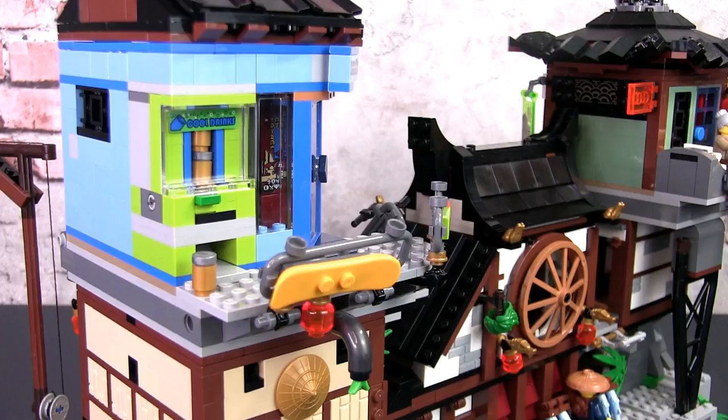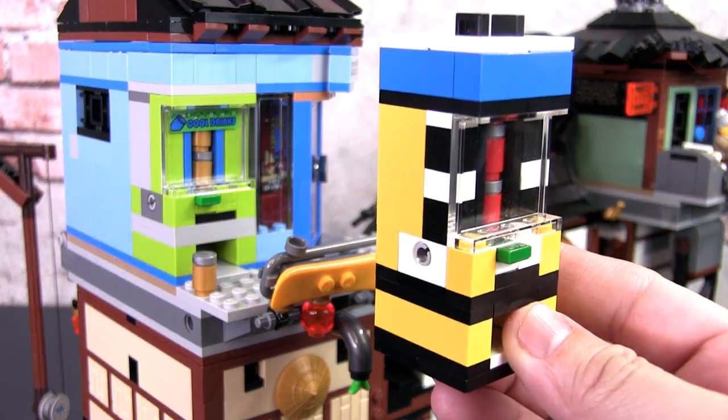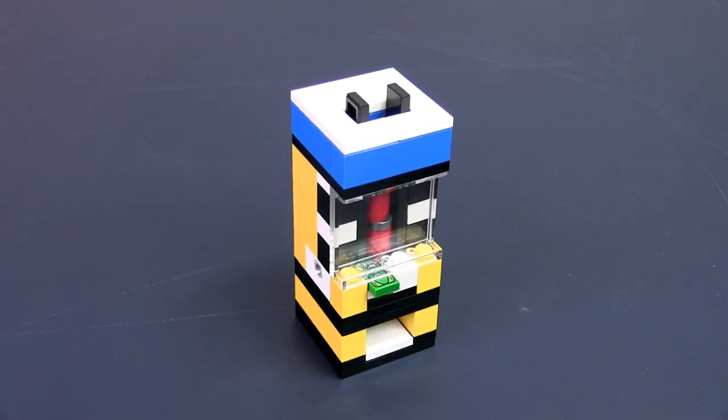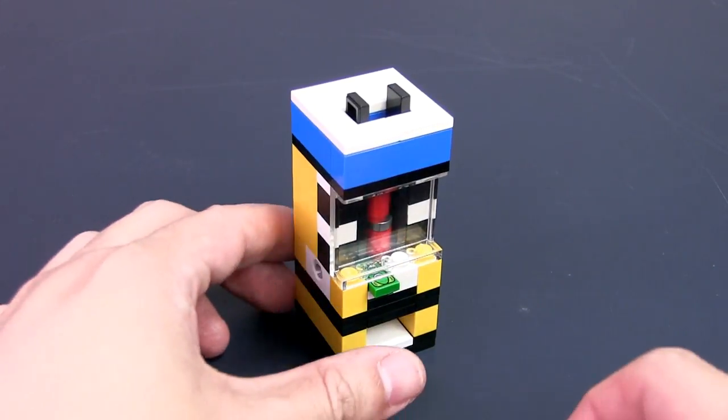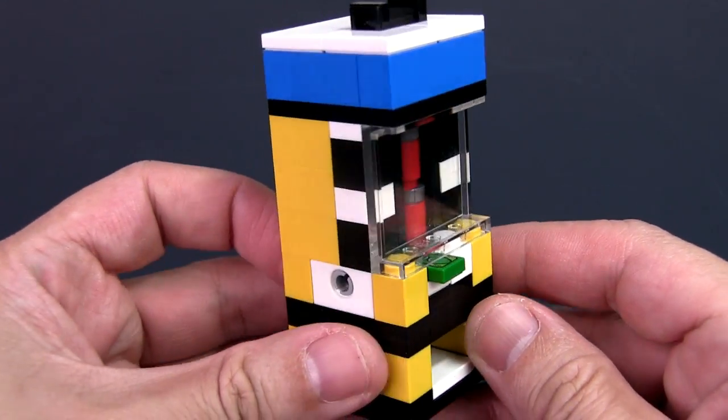Now, not everyone may get the Ninjago City docks. However, you might be interested in the vending machine as a standalone and that's what I've done. I've extracted the vending machine, modified it with more regular parts and built it as a standalone machine which you can place in your own LEGO City. Now, all the credit goes to the LEGO designers, I did not change the inner workings or structure of the vending machine. I just made a few adjustments so that it could be standalone so all credit goes to the designers.